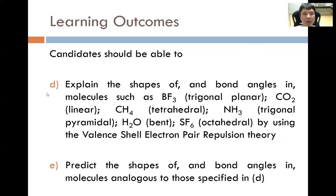Learning outcome D says that candidates should be able to explain the shapes of and bond angles in molecules such as BF₃ trigonal planar, CO₂ linear, CH₄ tetrahedral, NH₃ trigonal pyramidal, H₂O bent, SF₆ octahedral by using the valence shell electron pair repulsion theory. Learning outcome E is to be able to predict the shapes of and bond angles in molecules analogous to those specified in learning outcome D.